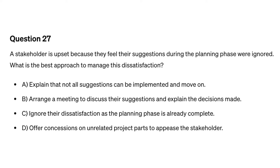Question twenty-seven. A stakeholder is upset because they feel their suggestions during the planning phase were ignored. What is the best approach to manage this dissatisfaction? A. Explain that not all suggestions can be implemented and move on. B. Arrange a meeting to discuss their suggestions and explain the decisions made. C. Ignore their dissatisfaction as the planning phase is already complete. D. Offer concessions on unrelated project parts to appease the stakeholder.